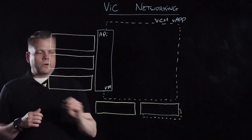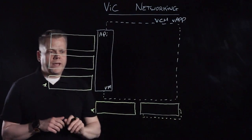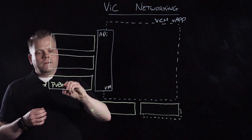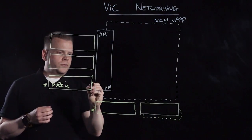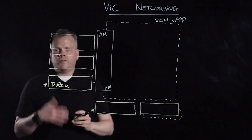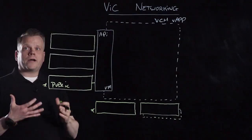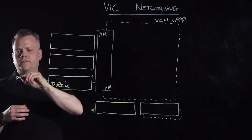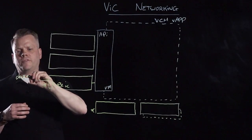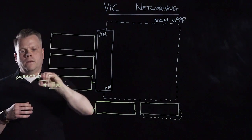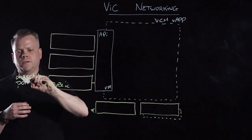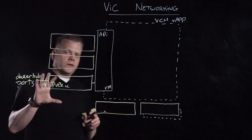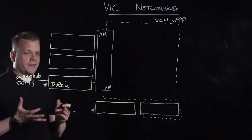There are two networks that are mandatory when creating a VCH. The first one is your public network. This public network is attached to the container host and, if you're familiar with Docker, this is really your Docker eth0. It's used for connection to the internet to download from Docker Hub, for example, or to expose ports running inside your containers. This can be configured with either DHCP or a static IP address.